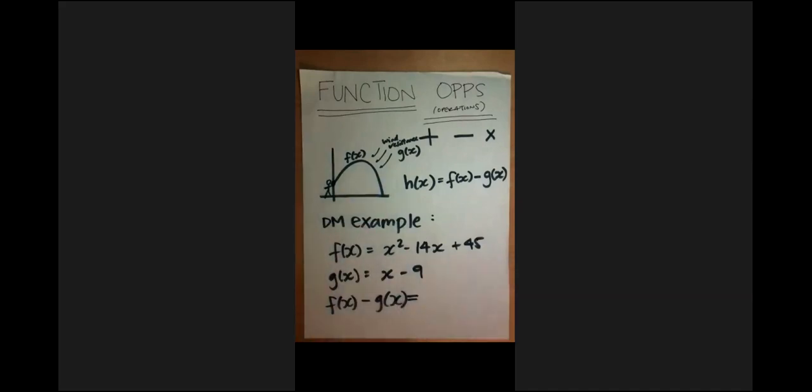Okay, so I wrote down our Delta Math example. We're going to see what the mechanics look like - taking f of x, subtracting g of x. I'm going to write this in a stacked form because that's easier for me to see: x squared minus 14x plus 45.